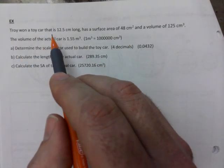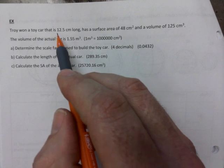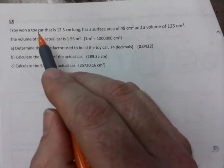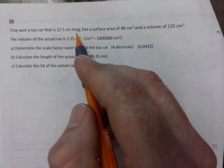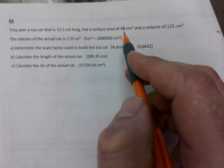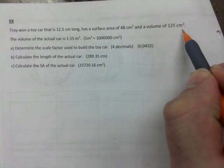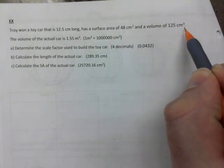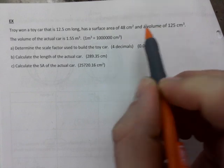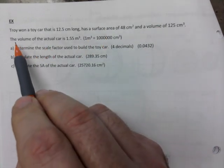Here we have that Troy won a toy car that is 12.5 cm long, has a surface area of 48 cm² and a volume of 125 cm³.